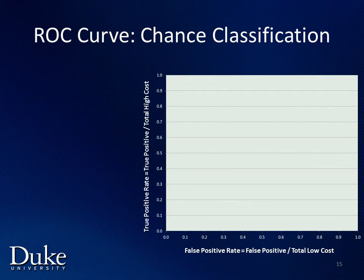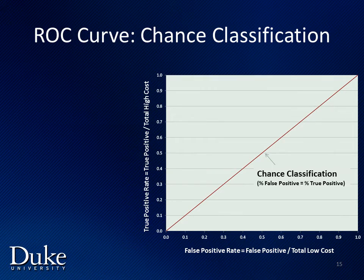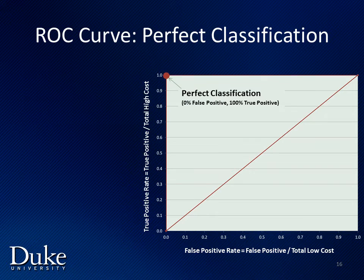We begin creating our ROC curve by assigning our axes. The x-axis is the false positive rate and the y-axis is the true positive rate. If our true positive rate is equal to our false positive rate, our line is a diagonal and indicates that we aren't doing any better than chance in our classification. In contrast, if we classified all individuals perfectly, our false positive rate would be zero and our true positive rate would be one, and we'd end up with this graph.